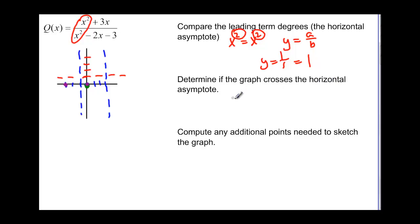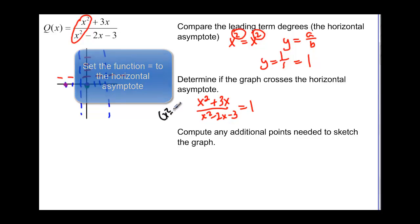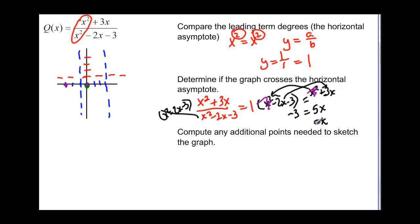To check if the graph crosses the horizontal asymptote, we set (x² + 3x) / (x² − 2x − 3) = 1, then multiply both sides by (x² − 2x − 3) to clear the fraction. We get x² + 3x = x² − 2x − 3. The x² terms cancel, leaving 3x = −2x − 3, so 5x = −3, and x = negative 3/5.